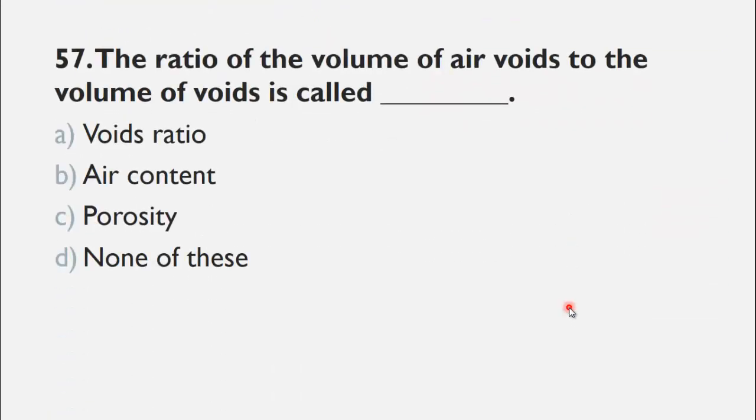MCQ number 57 is: The ratio of volume of air voids to the volume of voids is called ___. A) void ratio, B) air content, C) porosity, and D) none of these. The right choice for this question is B, air content.